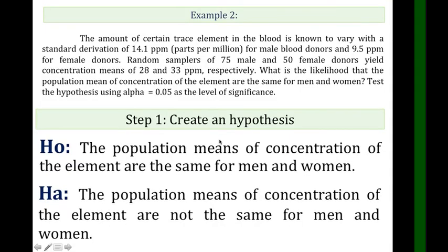First, determine the HO and HA. Find the question: the likelihood that the population means of concentration of the elements are the same for men and women. So that is our HO.